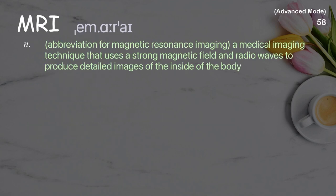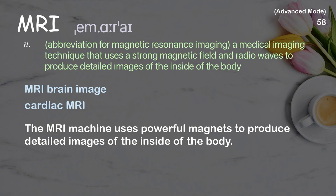MRI: abbreviation for Magnetic Resonance Imaging — a medical imaging technique that uses a strong magnetic field and radio waves to produce detailed images of the inside of the body. The MRI machine uses powerful magnets to produce detailed images of the inside of the body.